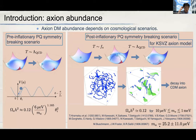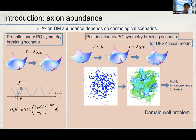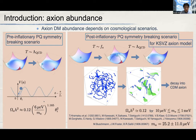For the KSVZ axion model this is the story, but for the DFSZ axion model the scenario is completely different. In this case, each cosmic string is attached by six domain walls. The cosmic string and domain wall system is quite stable and cannot completely decay into axions, making the resulting universe highly inhomogeneous — this is known as the domain wall problem. Therefore, the DFSZ axion model cannot apply to the post-inflationary Peccei-Quinn symmetry breaking scenario; the Peccei-Quinn symmetry must be broken before inflation.